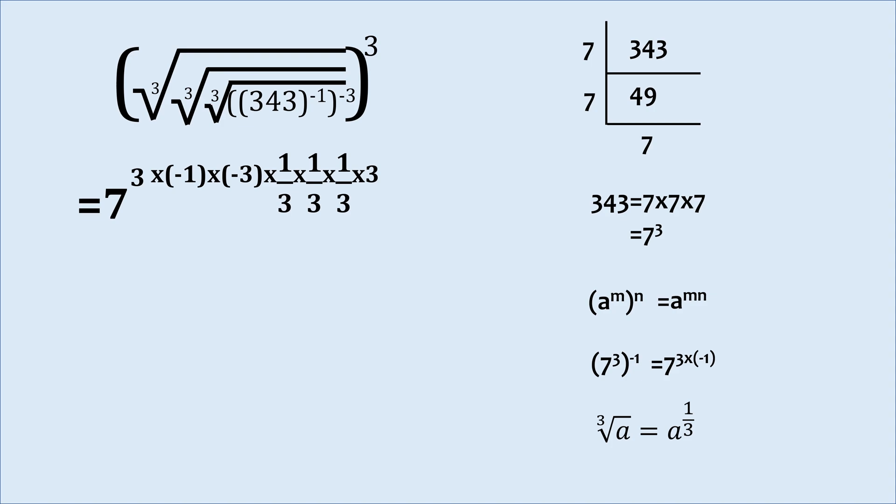We go on multiplying power like so in order to remove the cube root sign from the expression. Finally, we arrive at this expression. We work out the powers to arrive at 7 which is the answer.